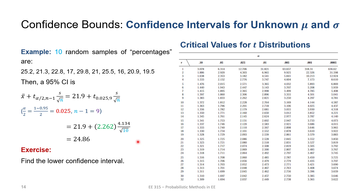For the example: 10 random samples are given and we want to find the 95 percent confidence interval. We compute the sample mean x-bar by summing and dividing by n, getting x-bar equals 21.9. The sample standard deviation s is calculated directly from the samples and turns out to be 2.261. Since we want 95 percent confidence, alpha over 2 equals 0.025.